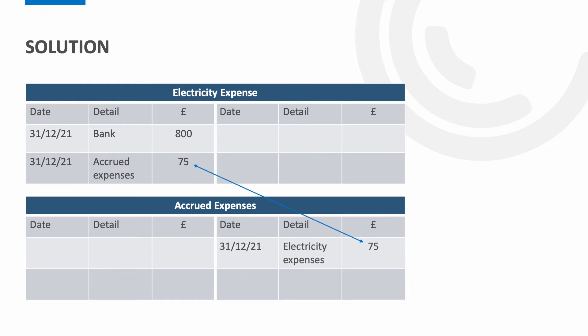We now need to close off these accounts as part of the year-end process. We transfer the balance on the electricity expense to the profit or loss — the current balance of £800 plus the accrued expense of £75 gives £875. We credit this to the electricity expense and debit the profit or loss. Within the accrued expenses we balance off the account, which will then be brought down into the next period.